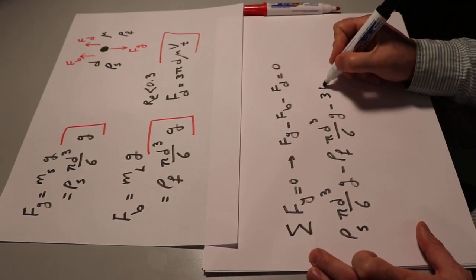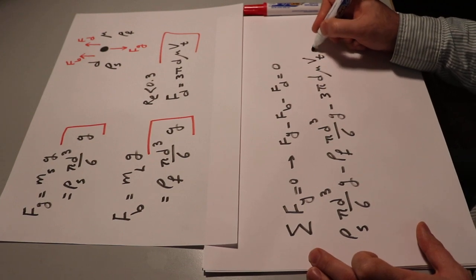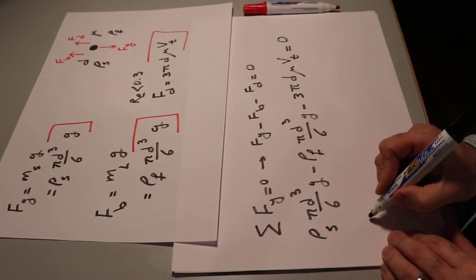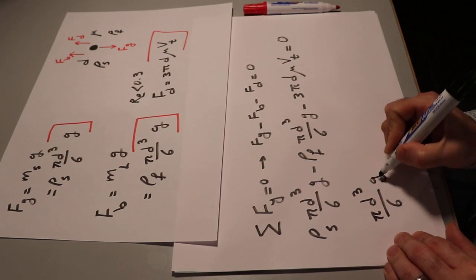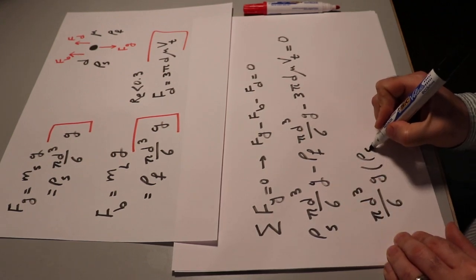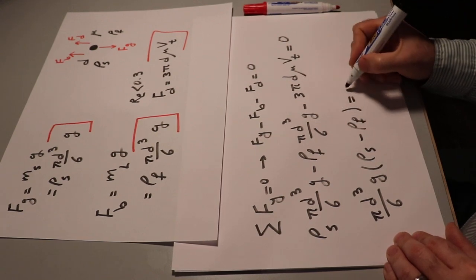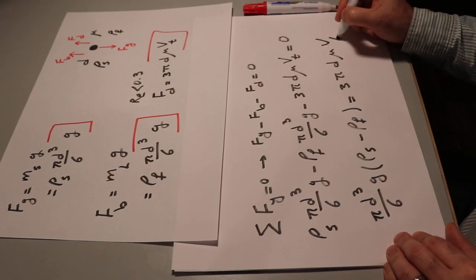So here you can factor pi d cubed, 6 times g, and it will be rho s minus rho f, equal to 3 pi d mu and Vt, terminal velocity.